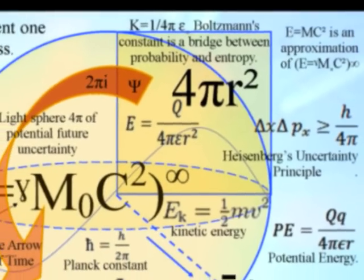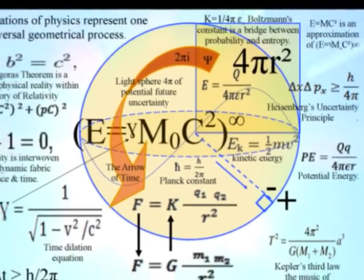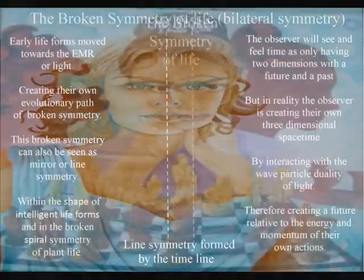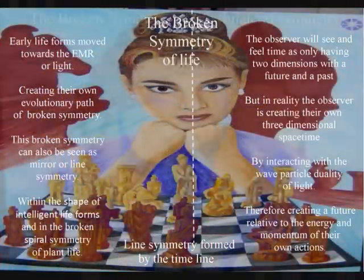Because this is a geometrical process, the line symmetry, or left and right handedness, is part of the geometry of all intelligent life. All life that consciously forms its own evolutionary path will have line symmetry, representing the timeline of that life form.